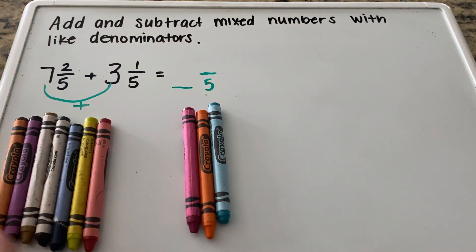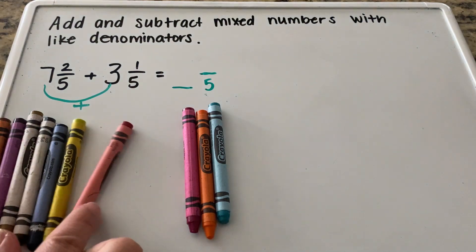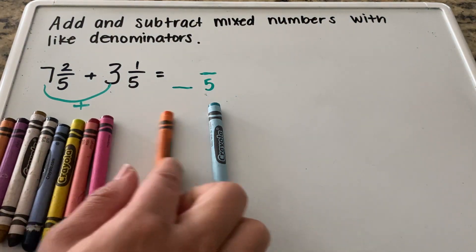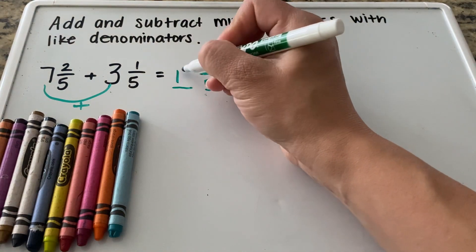So how many does that make? We have one, two, three, four, five, six, seven, eight, nine, ten crayons total. So seven plus three is ten.